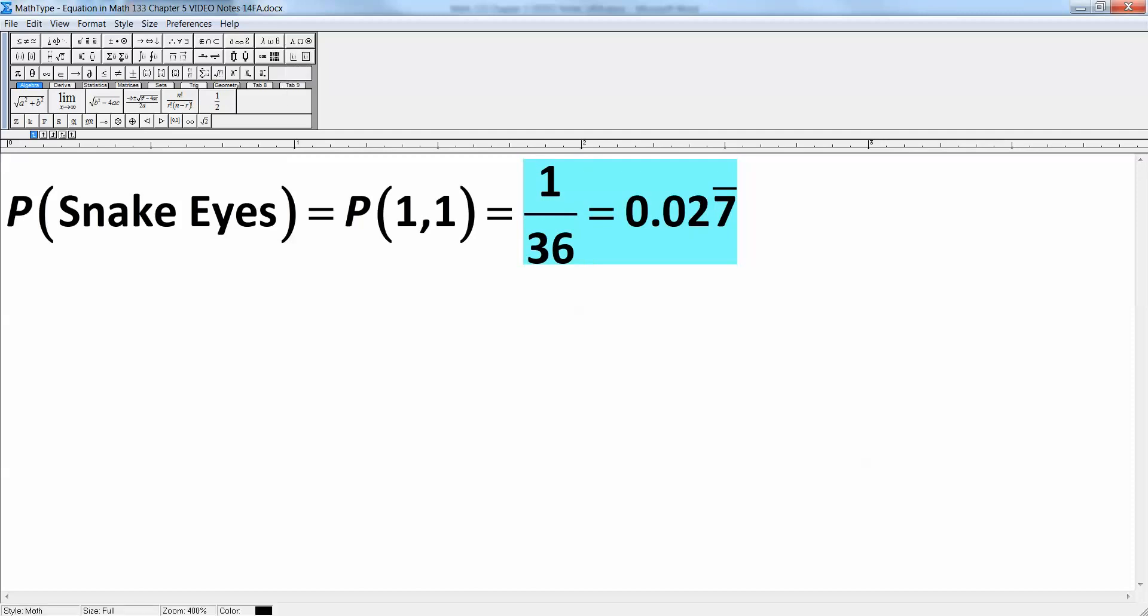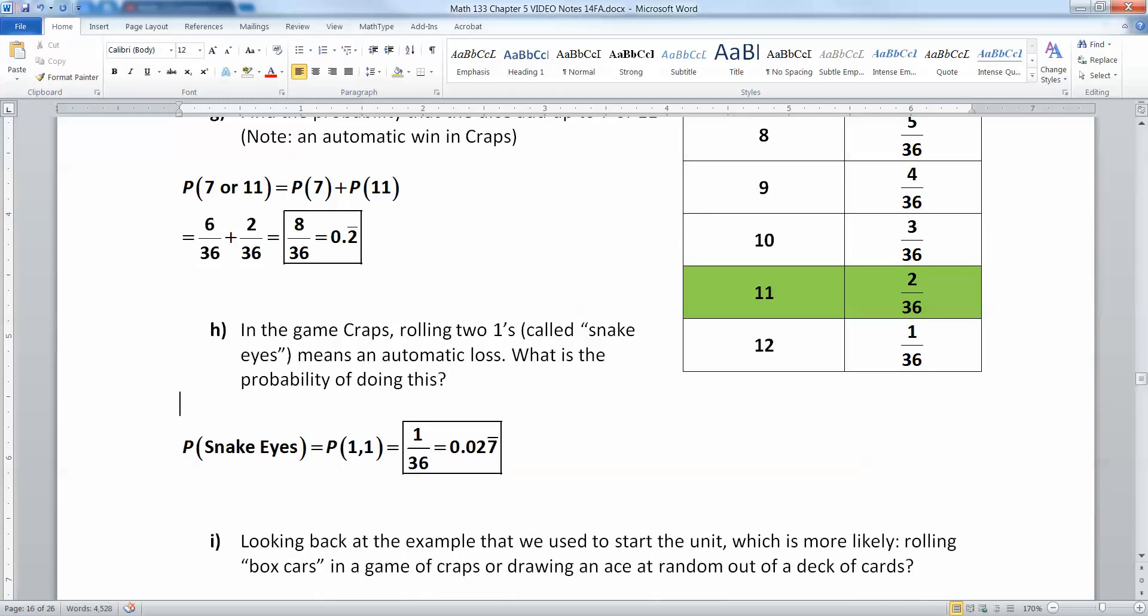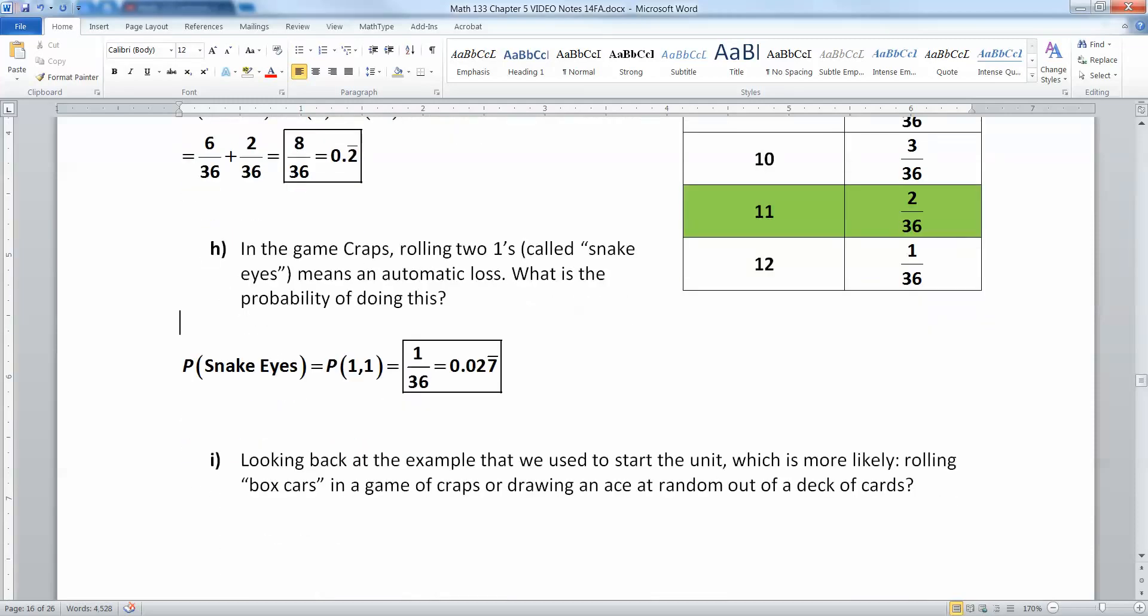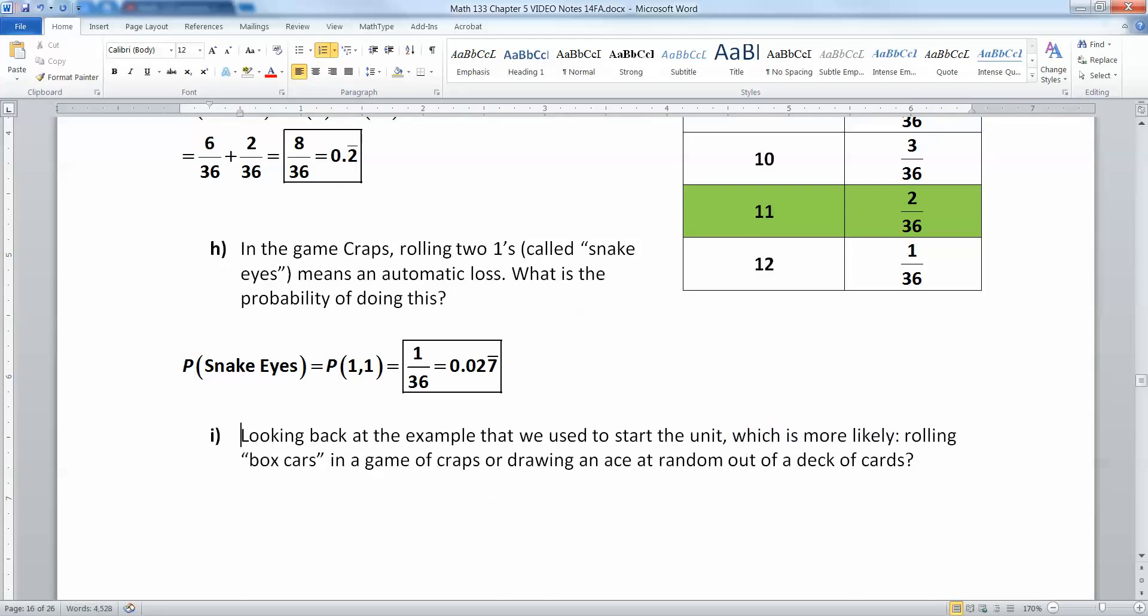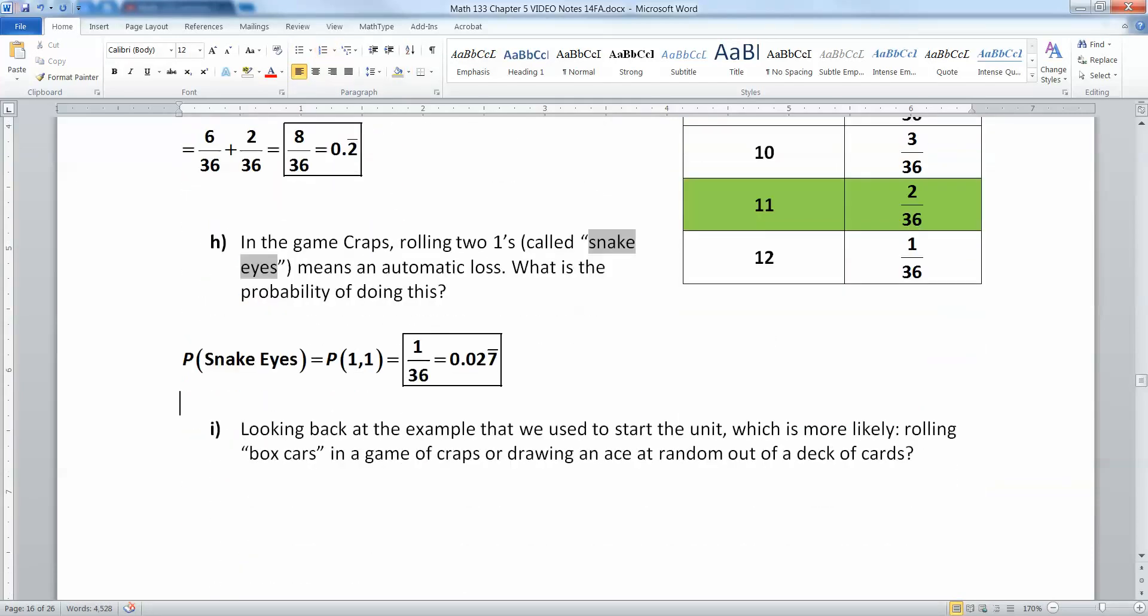So either way, either the fraction or the decimal. The decimal is more useful to us, honestly. But if you want to see the fraction, that's where it came from. Now we look back at the example that started our unit, which is more likely, rolling boxcars in a game of craps or drawing an ace? So let me, rolling snake eyes, let me label that. Snake eyes was gray because that's sad.